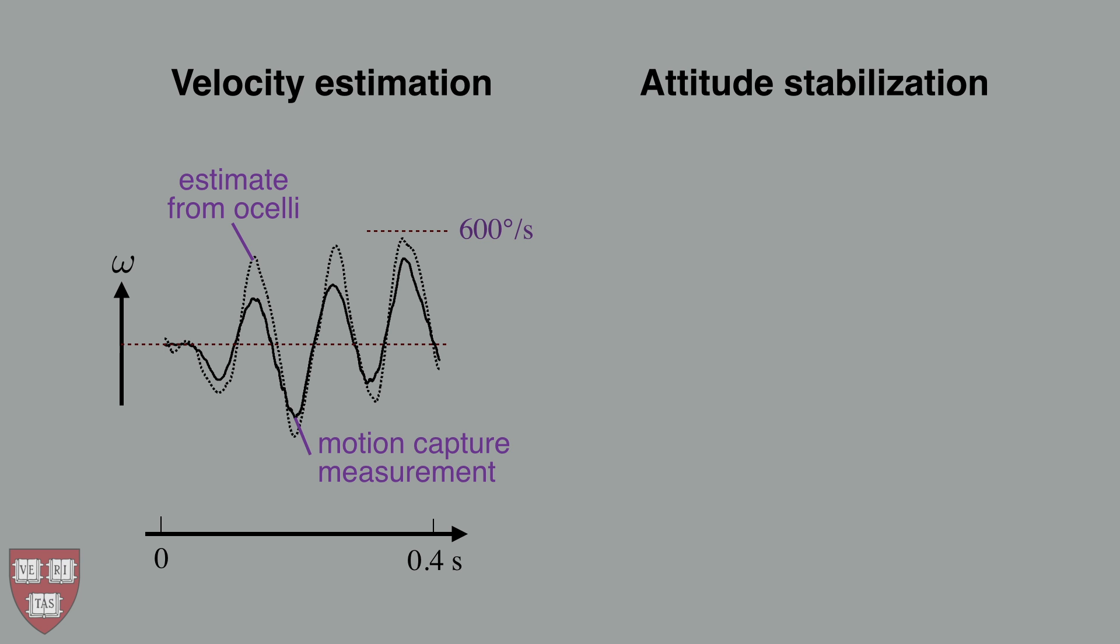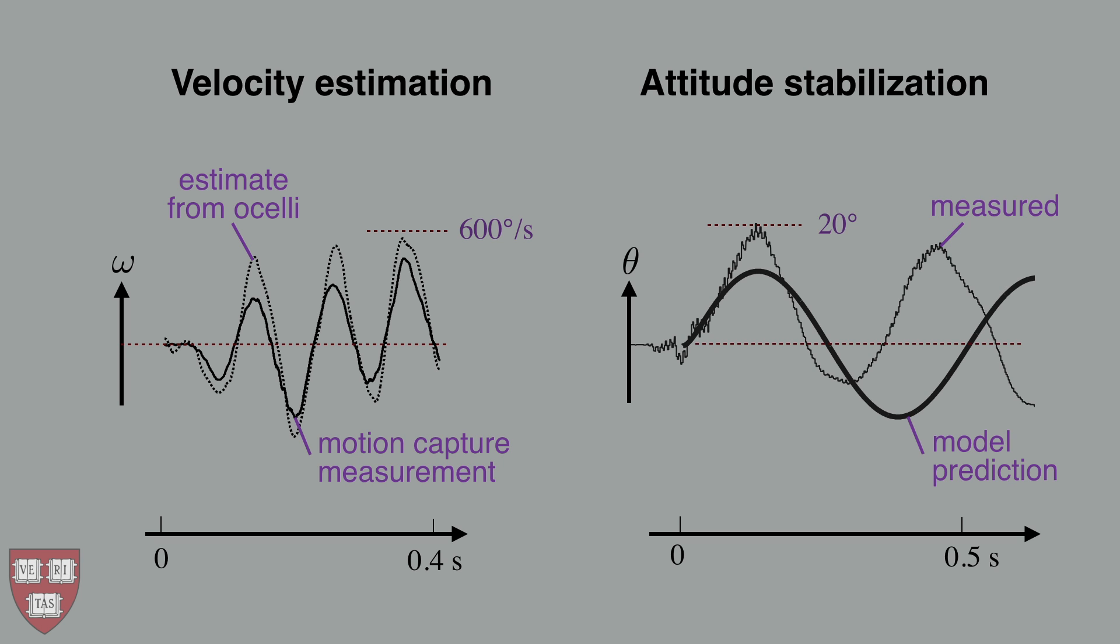We verified that the estimate of angular velocity derived from the ocelli is equal to its true value up to a constant and measurement noise, as predicted. We also verified that our model predicts the correct stability threshold for feedback gain.